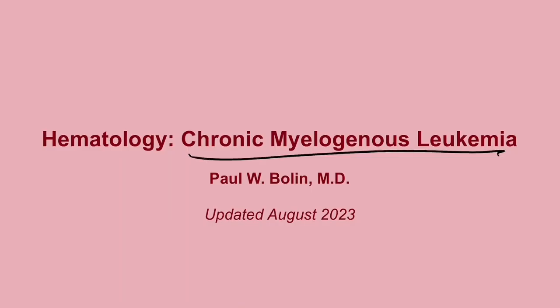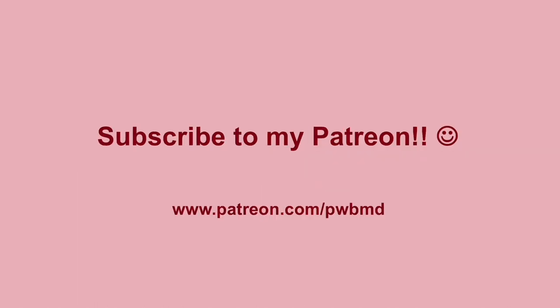Welcome back. We're going to talk about chronic myelogenous leukemia. This one comes up a lot on your exam — out of all four leukemias, five if you include hairy cell, this is probably the most tested and it's very common. You'll want to know this one front and back. Everything included here is the high-yield stuff, so this may go 10-11 minutes.